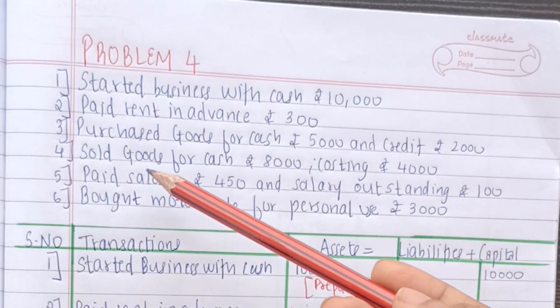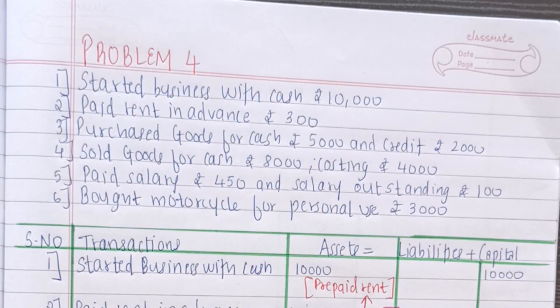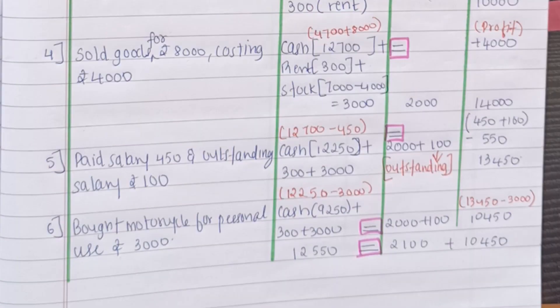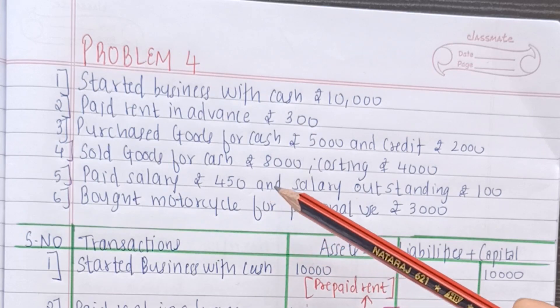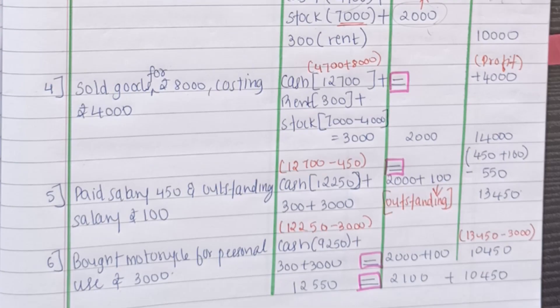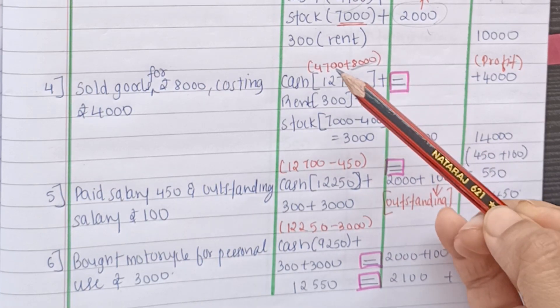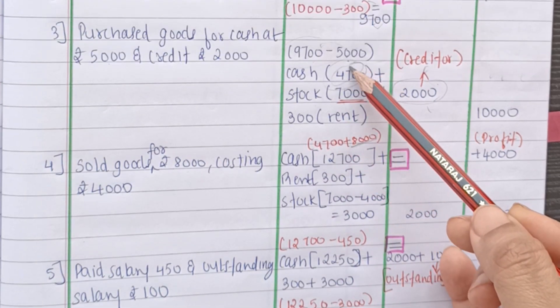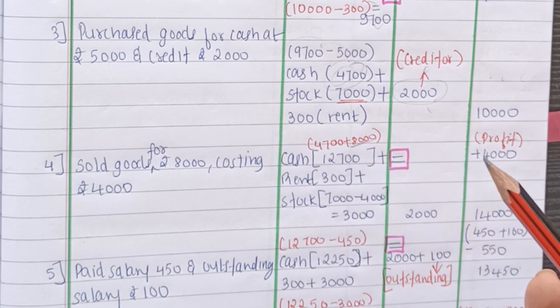So moving on to the 4 transaction. Sold goods for cash Rs.8000 costing Rs.4000. So now here what happened is we sold goods at Rs.8000. And their value was Rs.4000. It means we made a profit of Rs.4000. Right. Because the total value of it was Rs.4000. And we sold it for Rs.8000. So sold goods for cash Rs.8000 costing Rs.4000. So how much amount of cash you have received? You have received Rs.8000.